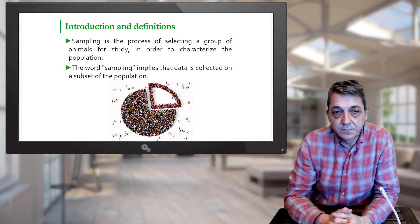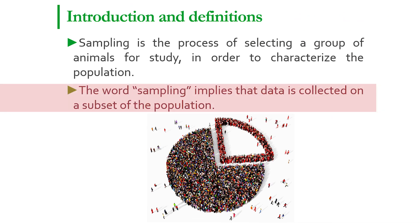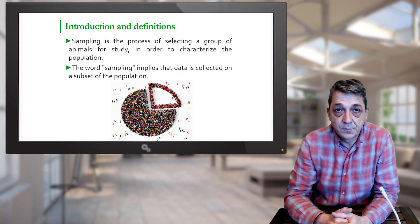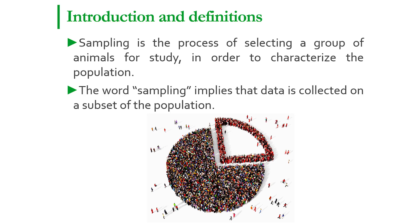Sampling is the process of selecting a group of animals from a population in order to study them and characterize the population as a whole. The word sampling implies that not all animals in the population are examined, but the information is drawn from a part or a subset of the population. In fact, the majority of epidemiology surveys are actually sample-based surveys.